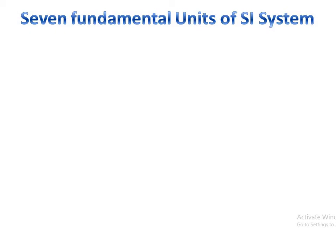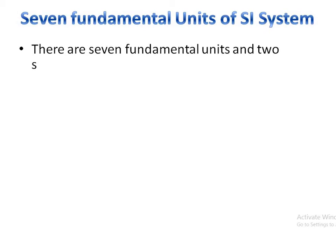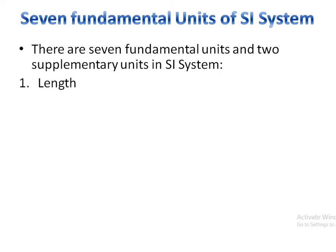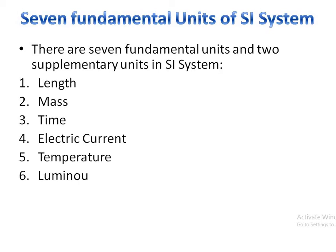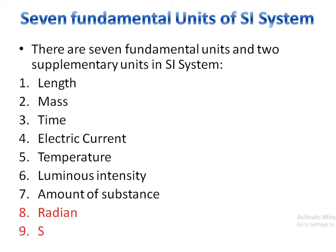There are seven fundamental units in the SI system, along with two supplementary units. The seven fundamental units are: length, mass, time, electric current, temperature, luminous intensity, and amount of substance. The two supplementary units are radian and steradian, which are also part of the SI system.